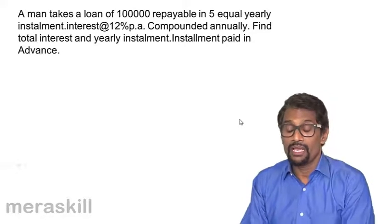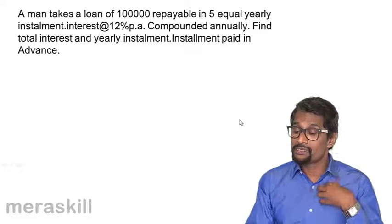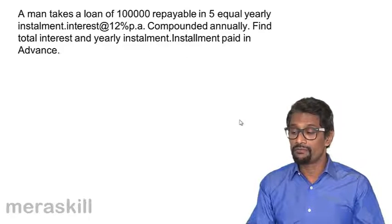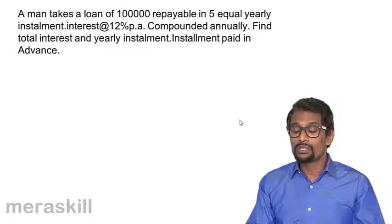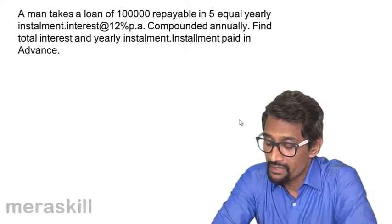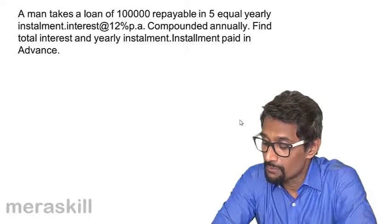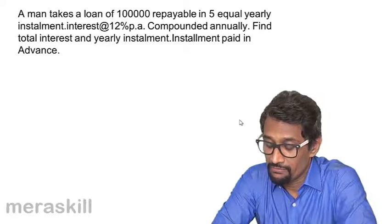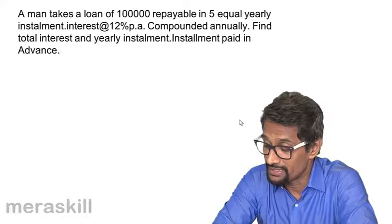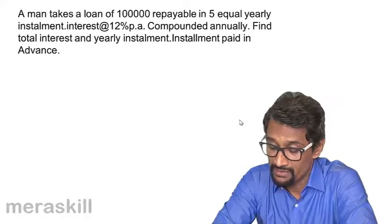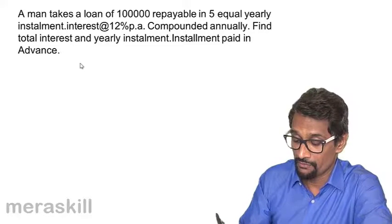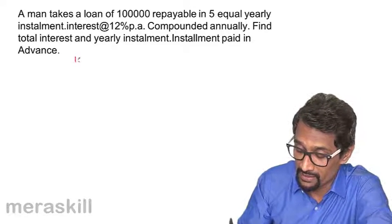Now we have a case wherein a man takes a loan of 100,000 repayable in 5 equal yearly installments. Interest is at the rate of 12% per annum compounded annually. Find the total interest, the yearly installment, with installment paid in advance.